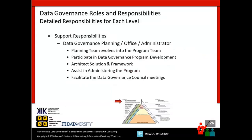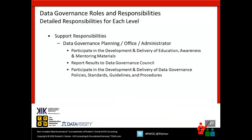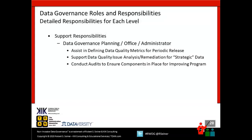The data governance office — the first level of support on the left-hand side of the pyramid — are the people guiding the ship. They have responsibility for the program. They may start as a planning team but evolve into a program team. They administer the program, facilitate council meetings, participate in the delivery of education and awareness, and report the results. They assist in defining metrics, support data quality issue resolution to focus on the most critical and strategic data, and conduct audits. The data governance planning team or office is critical to the success of your program.